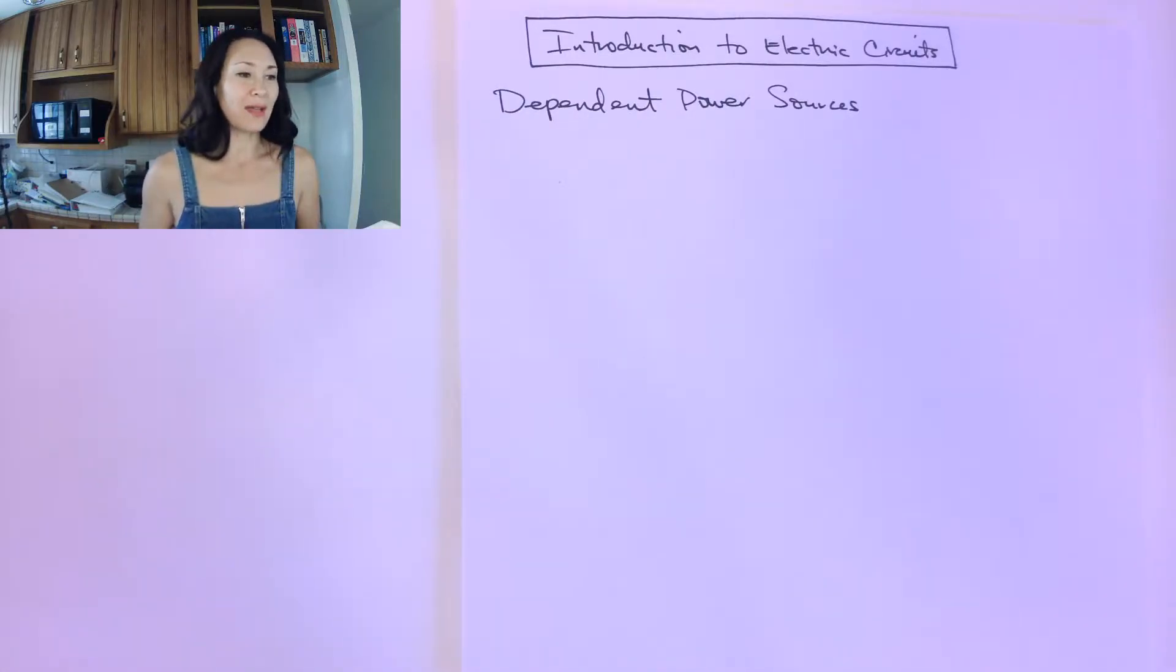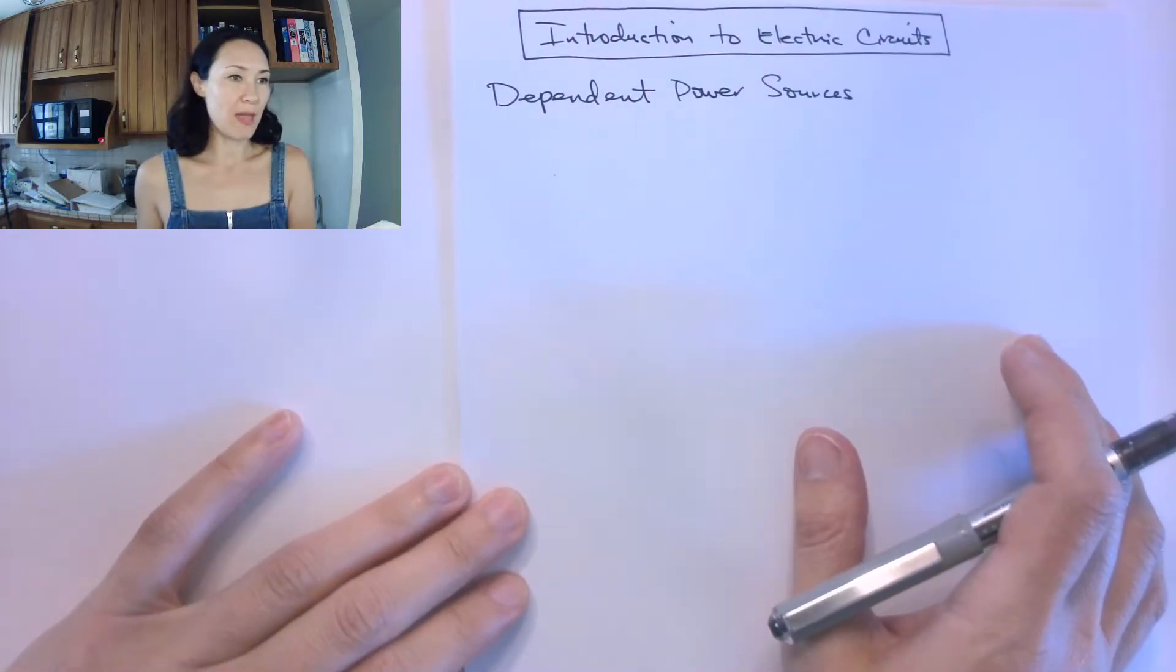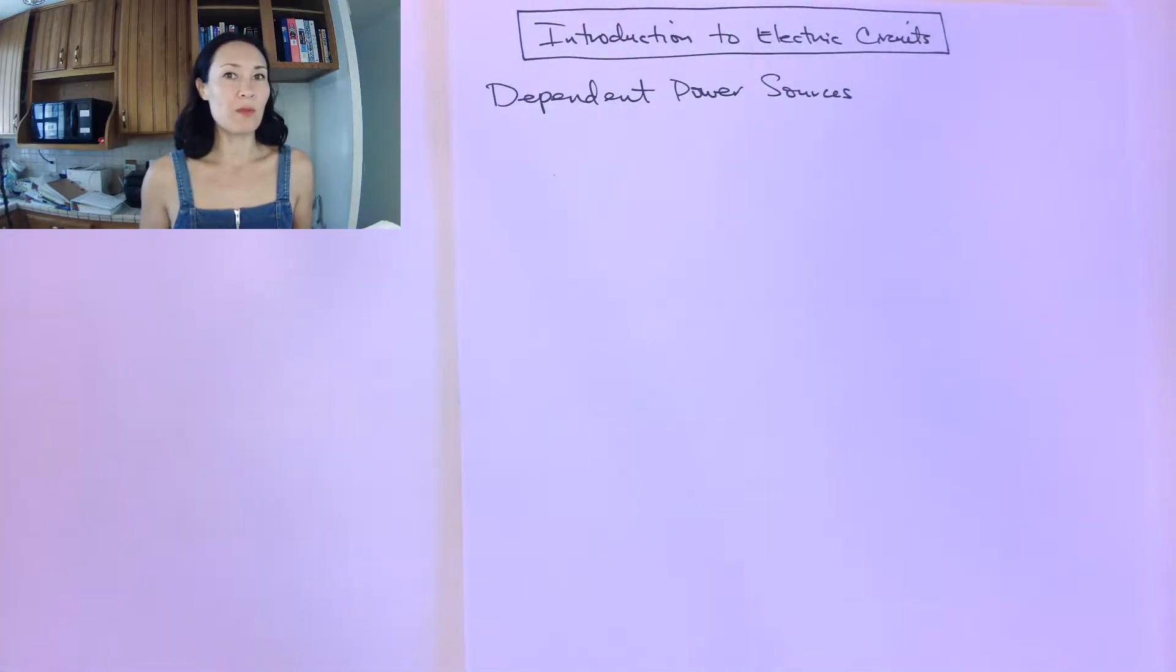But don't worry, these sources are not complicated to understand. In the last module, we introduced independent voltage and independent current sources, and those were nice because from the beginning we're told exactly how much voltage or current those sources will supply to our circuit.